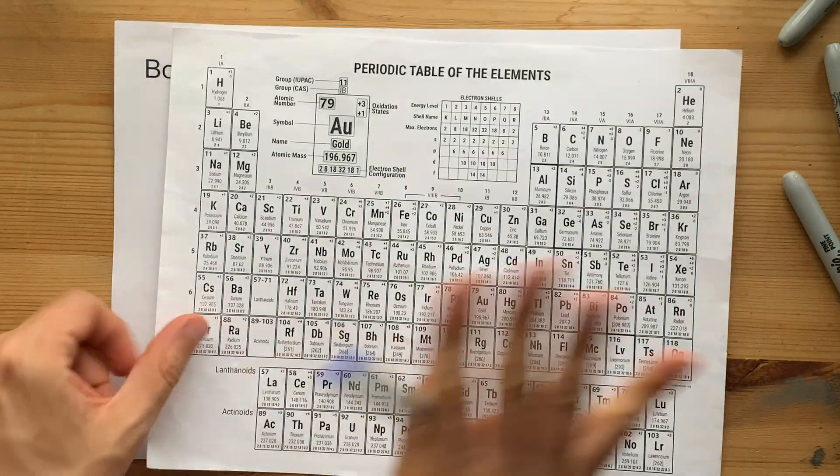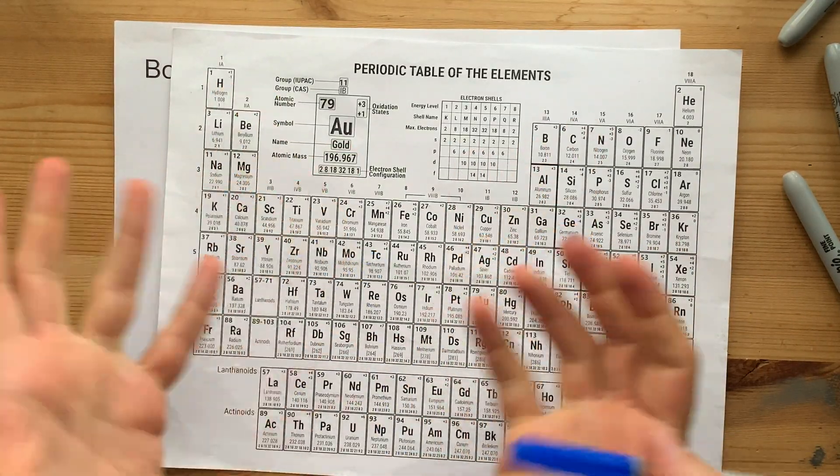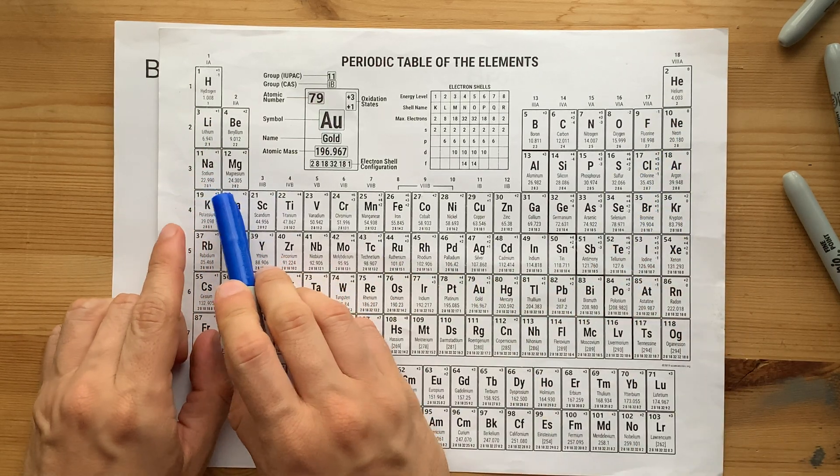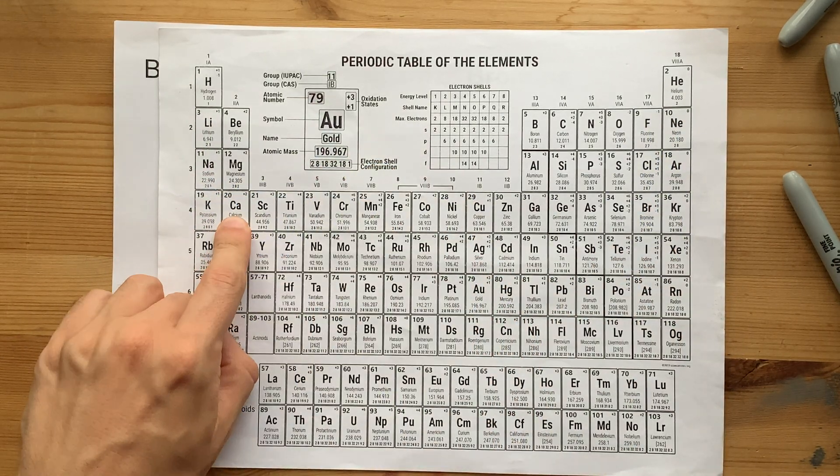Here's what I mean. Bohr-Rutherford diagrams are normal, as in you fit two electrons in the first shell, eight in the second, eight in the third, and two in the fourth, only until you get to calcium.